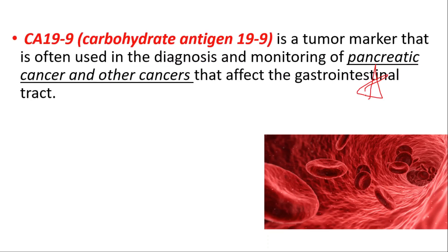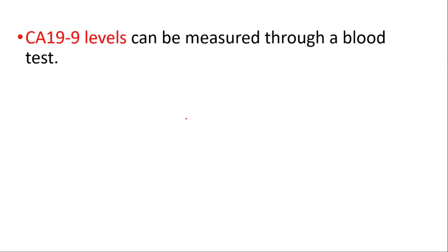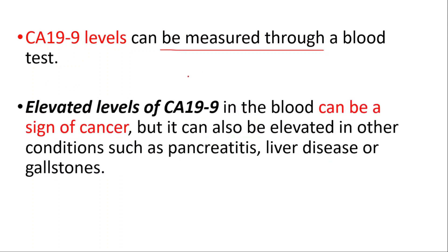In this video we will talk about CA-19-9. It's a tumor marker that is often used to diagnose pancreatic cancer and other cancers that affect the gastrointestinal tract. It can be measured through a blood test, and elevated levels can be a sign of cancer, but it can also be elevated in other conditions such as pancreatitis, liver disease, or gallstones.